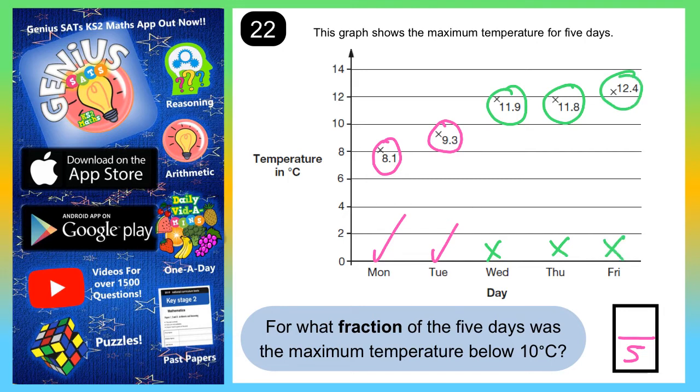It basically says below 10 degrees, and we've found that Monday and Tuesday were both below 10. So that's two out of the five days. Our fraction has to be two out of five. Thank you so much for watching.